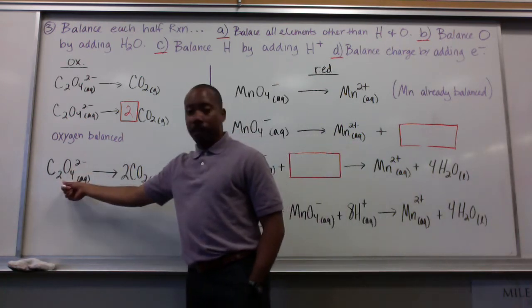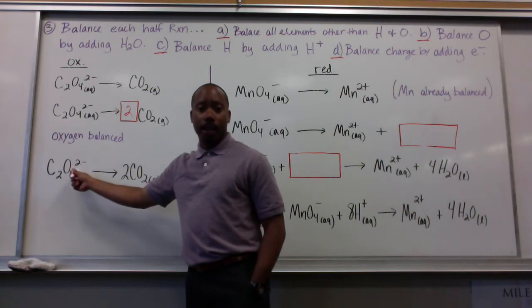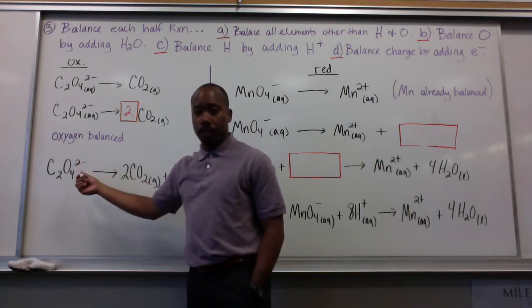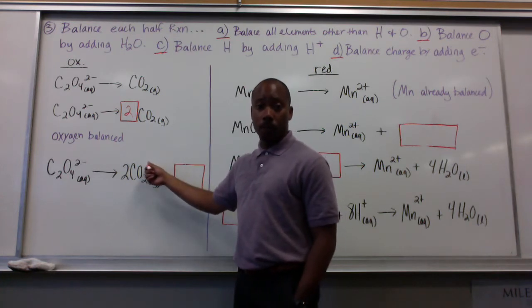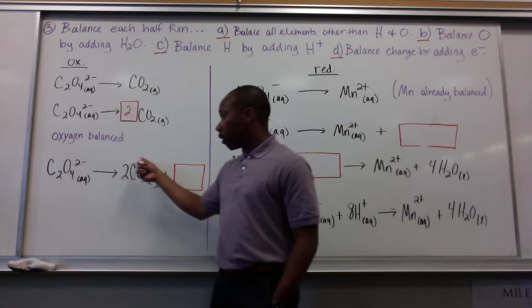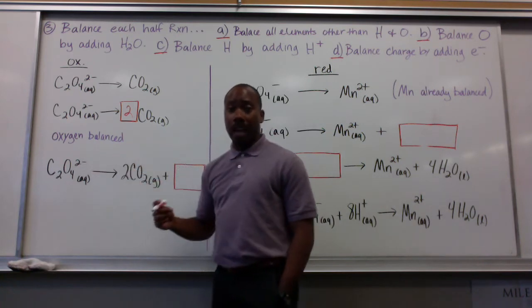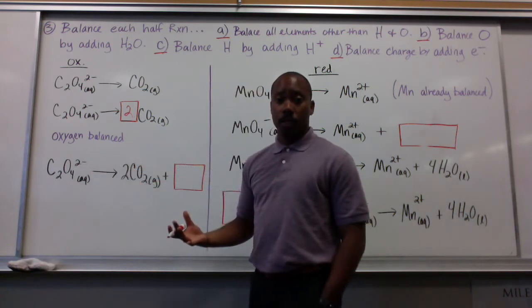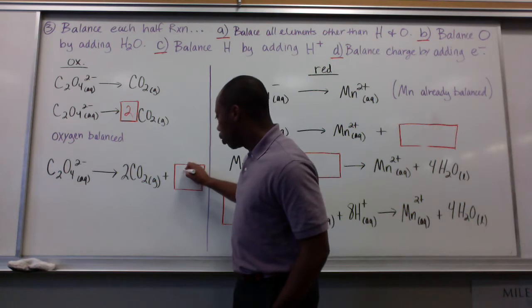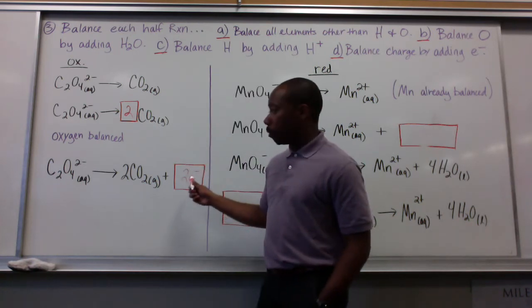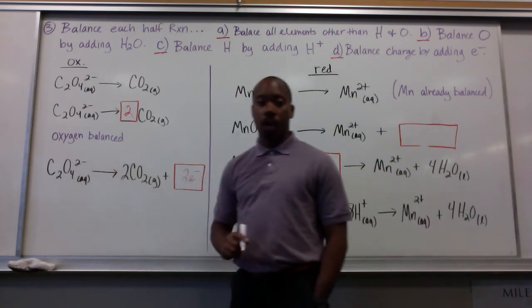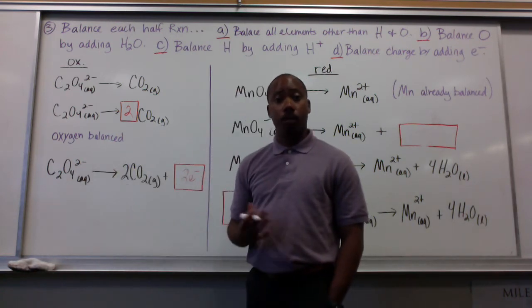So we go to the next step, final step, balance charge by adding electrons. My charge on my reactant side is 2-, so negative 2. Here, I have CO2 gas, electrically neutral. My charge over here is 0. So how do I balance 0 and negative 2? I can only add electrons here. So I have to add 2 electrons here in order to balance out the negative 2 charges over there. That's how you do that.